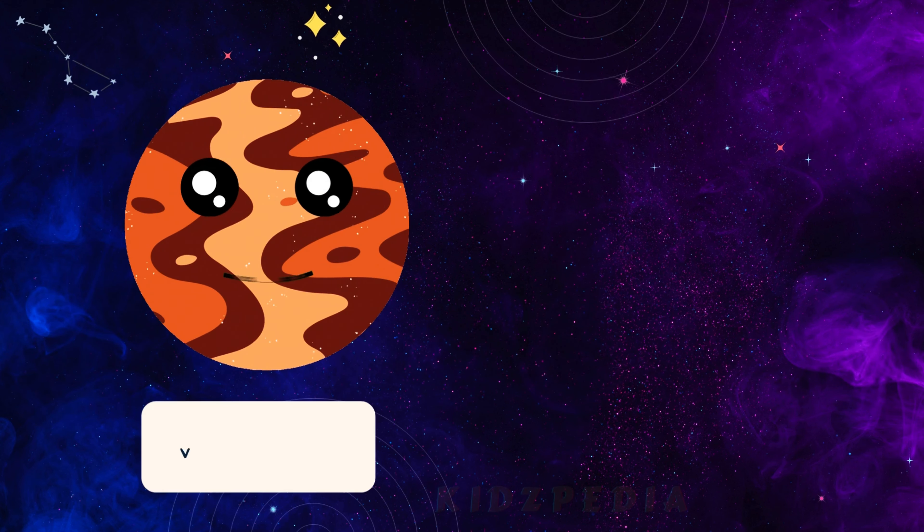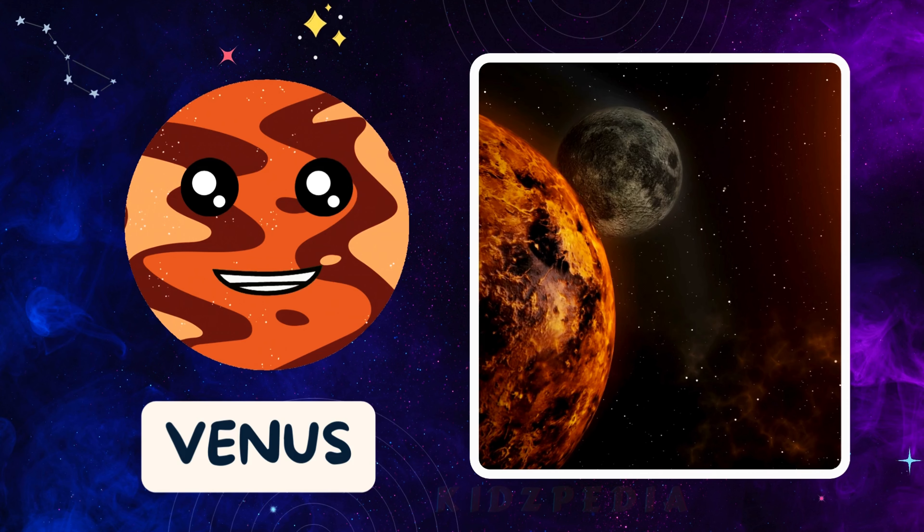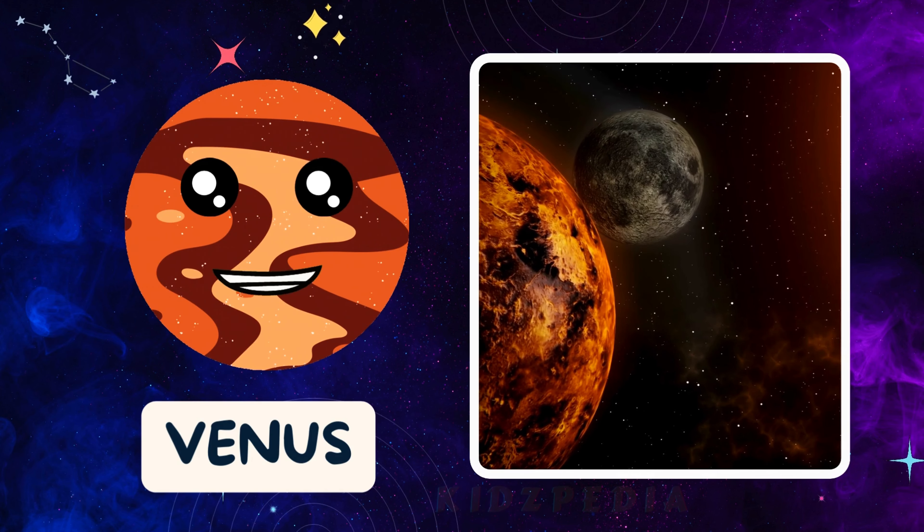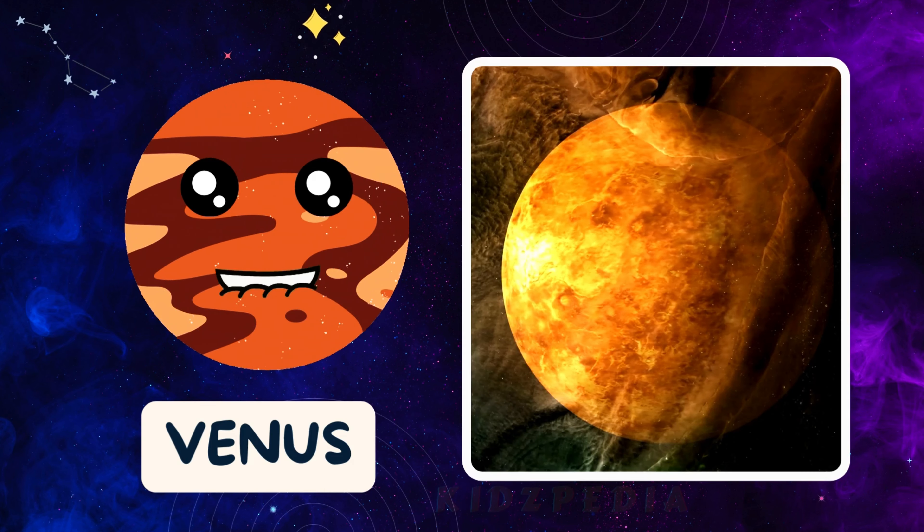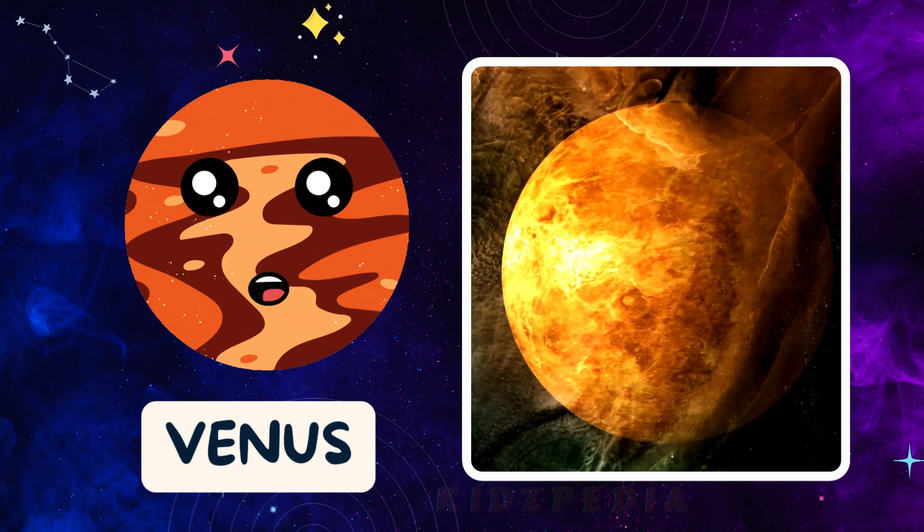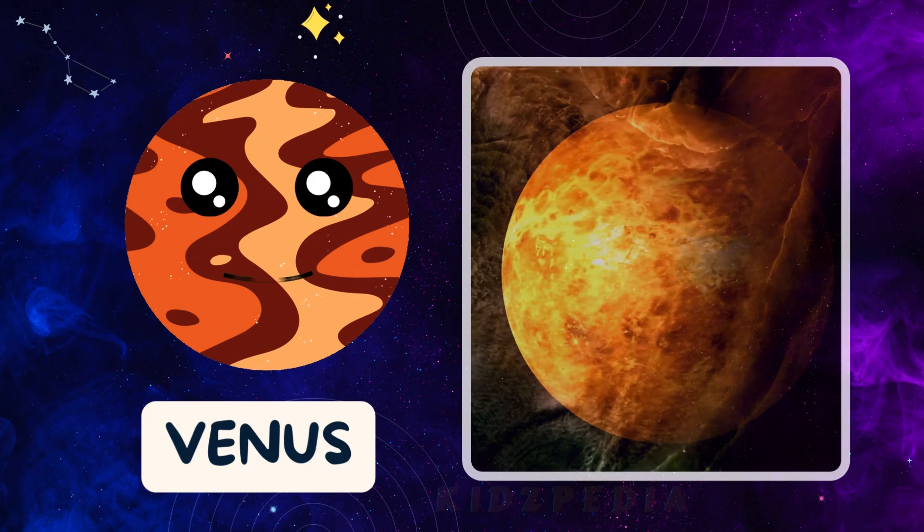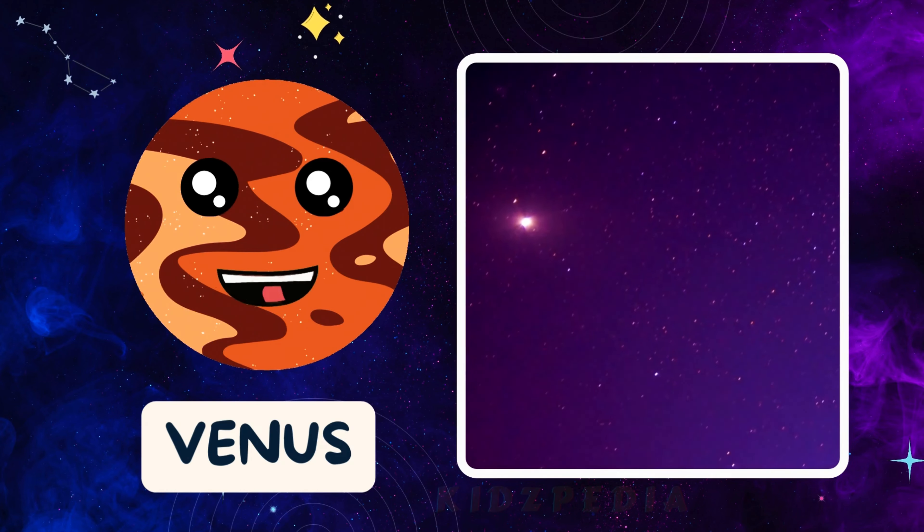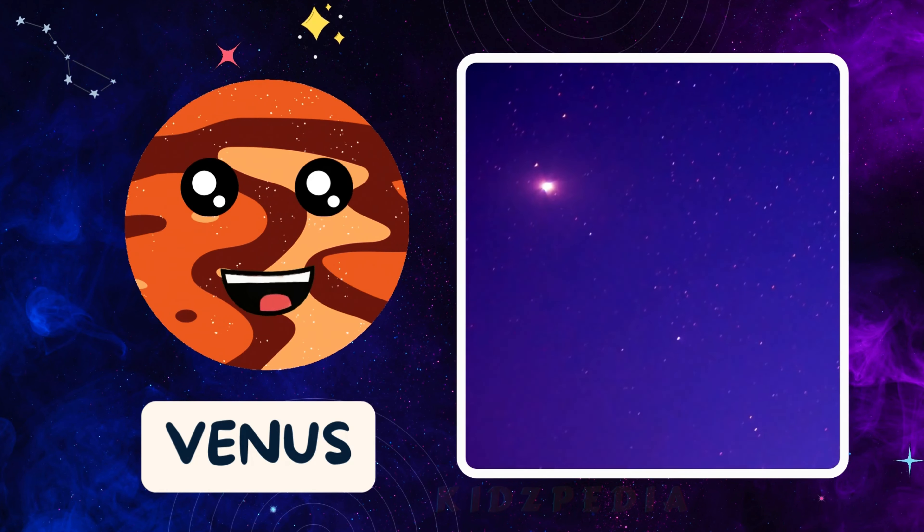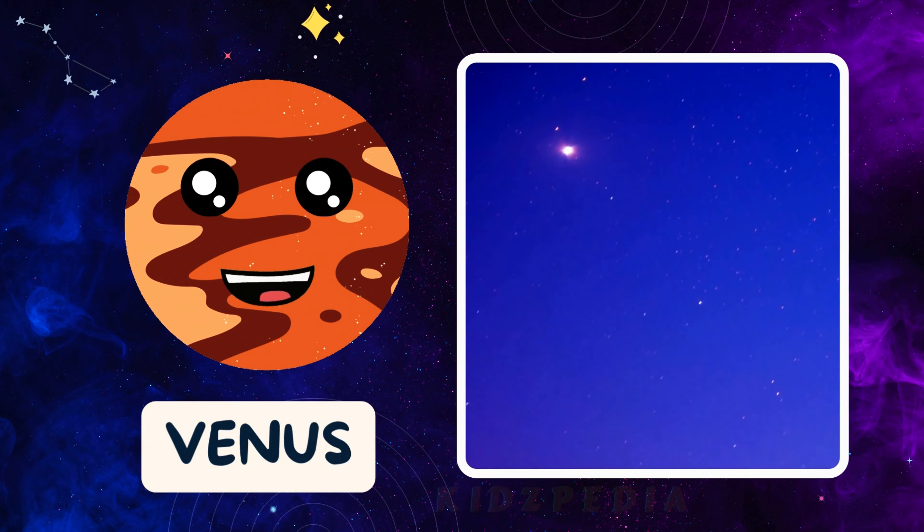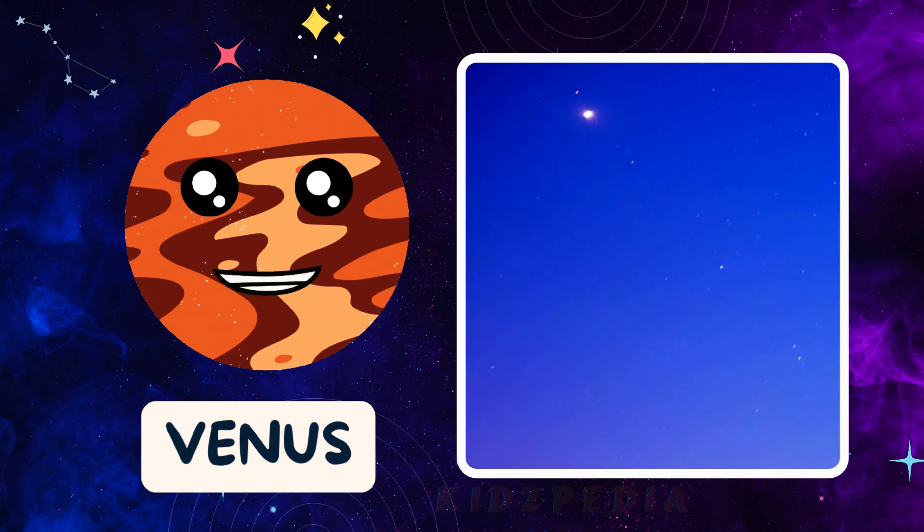Hello there. I'm Venus, Earth's twin. We're almost the same size, but I'm covered in thick clouds and I'm super hot, hotter than any other planet in the solar system. I'm also the brightest planet in the night sky, so you might see me shining like a star just after sunset or before sunrise.